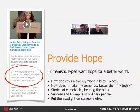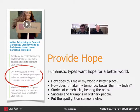Provide hope — humanistics want hope for a better world. You do this by answering: how does it make the world a better place? How does it make my tomorrow better than my today? They like stories of comebacks, beating the odds, successes and triumphs of ordinary people. Put the spotlight on somebody else. If you're really brave and want to do something unique, put the spotlight on a competitor. But for Pete's sake, take it off yourself. This is where we want to highlight the successes of other people — you don't want to stroke your own ego. So this is about other people and how you can make the world a better place.